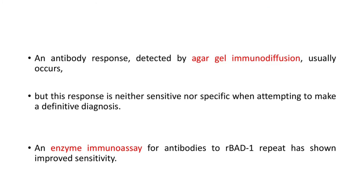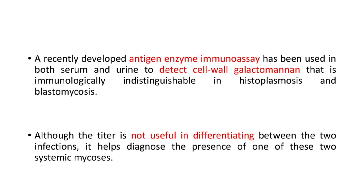An antibody response detected by agar gel immunodiffusion usually occurs, but this response is neither sensitive nor specific when attempting to make a definitive diagnosis. An enzyme immunoassay for antibodies to the BAD1 repeat has shown improved sensitivity over agar gel immunodiffusion. A recently developed antigen enzyme immunoassay used in both serum and urine detects cell wall galactomannan, which is immunologically indistinguishable between histoplasmosis and blastomycosis, although it helps diagnose the presence of one of these two systemic mycoses.